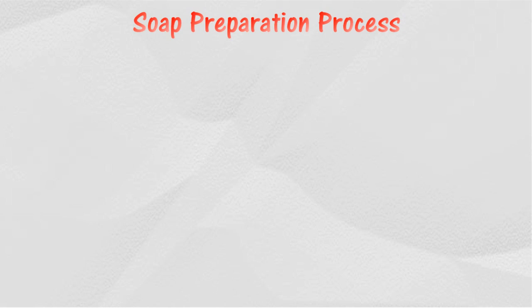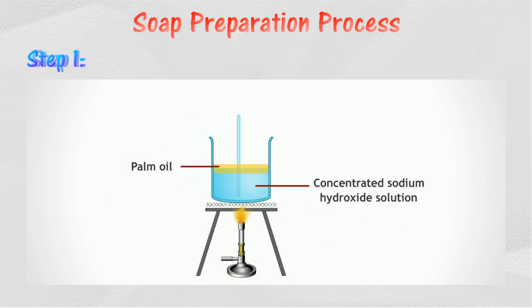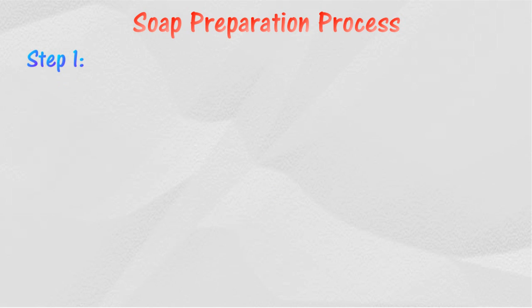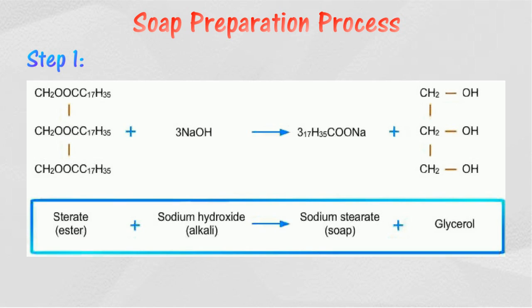The manufacturing of soap can be divided into three steps. In stage one, the two parts of the oil or fat molecule are separated by heating the oil with alkaline solution through the hydrolysis process. In this process, the oil and fat molecule is broken up into fatty acid and glycerol by water in the presence of alkali, which acts as a catalyst. The fatty acid then reacts with alkali to form sodium salt of fatty acid, which is soap.